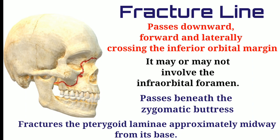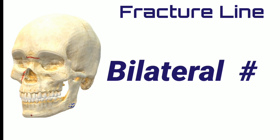The pterygoid lamina is divided into a superior half and middle half. In LeFort 1, the fracture was at the junction of superior two-thirds and inferior one-third, but in LeFort 2, it is at the junction of the superior and middle half. The same fracture line occurs in the opposite direction as well.